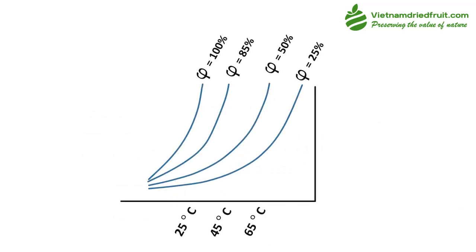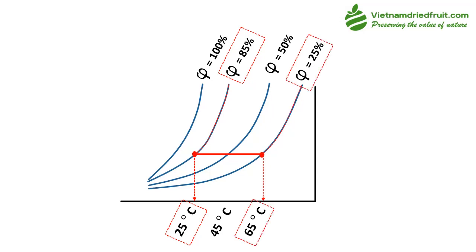Temperature of air and its relative humidity correlate to each other. You can look at the psychrometric chart, which indicates the properties of air. Increasing air temperature will reduce its relative humidity, and this principle is applied in the conventional hot air drying method.